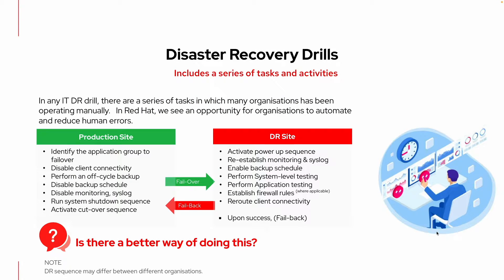In this case, we'll be looking at a disaster recovery trail. The typical steps will require things like identifying the application group that we have to failover, performing an off-cycle backup, and disabling monitoring syslog, before we are able to perform the failover to the disaster recovery site. Once the application is up on the DR site, we will reestablish monitoring syslogs along with other actions.